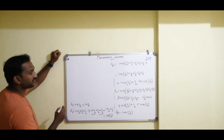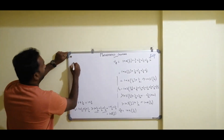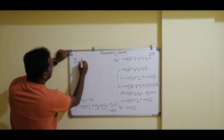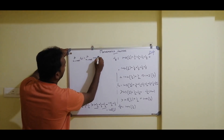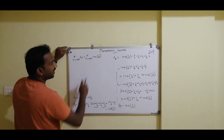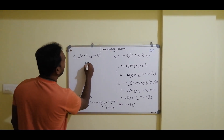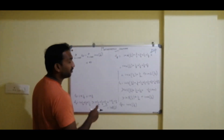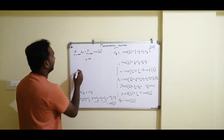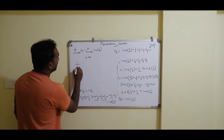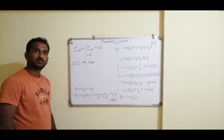By the definition of divergence, since limit as n→∞ of Sn = +∞, we conclude that Σ(1/n) is a divergent series. Thanks for watching.